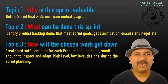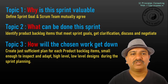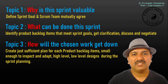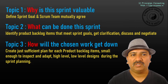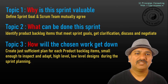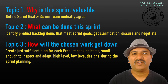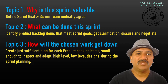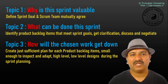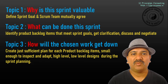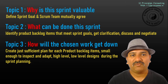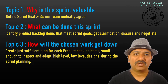The Sprint Planning is divided into three topics. The first topic is: why is the Sprint valuable? Here, the Product Owner defines the Sprint Goal, and as a Scrum team, they mutually agree whether the Sprint Goal is meaningful, achievable, and valuable.